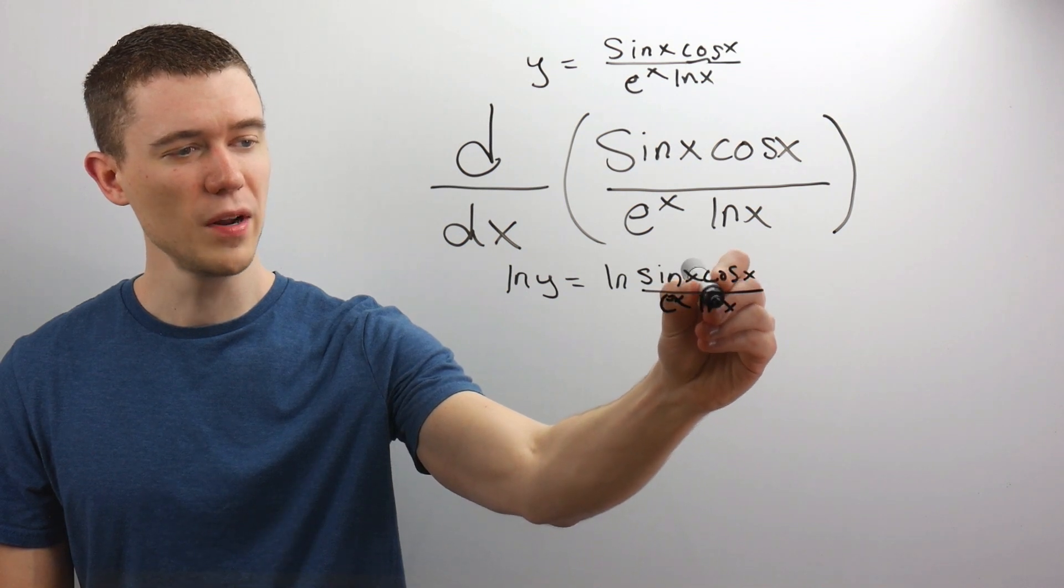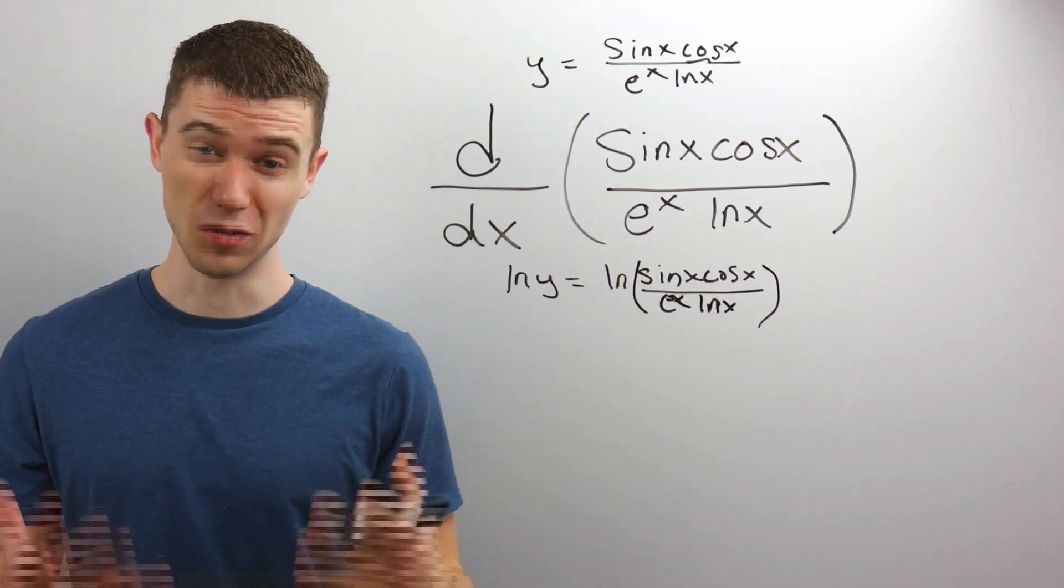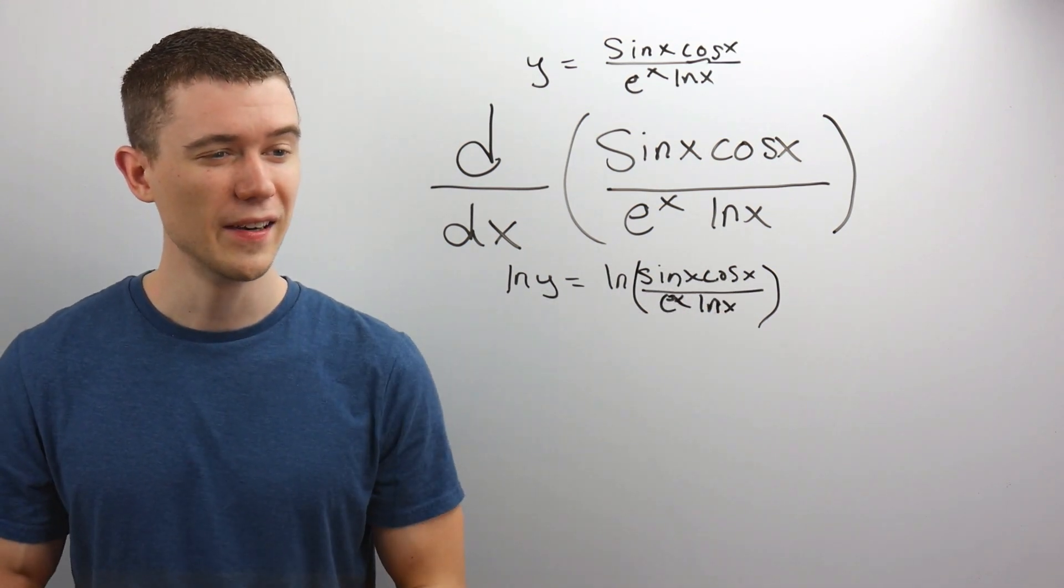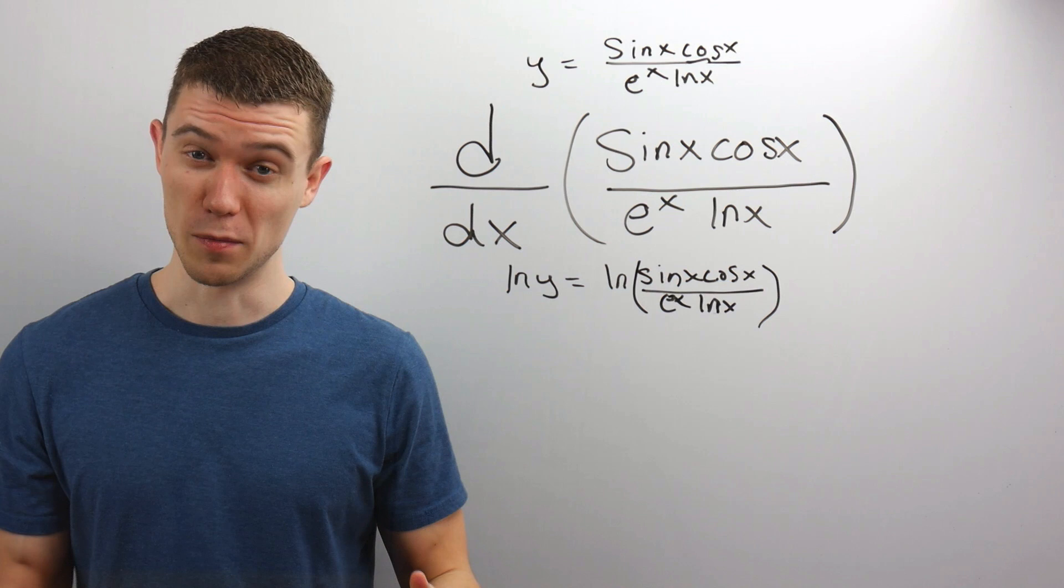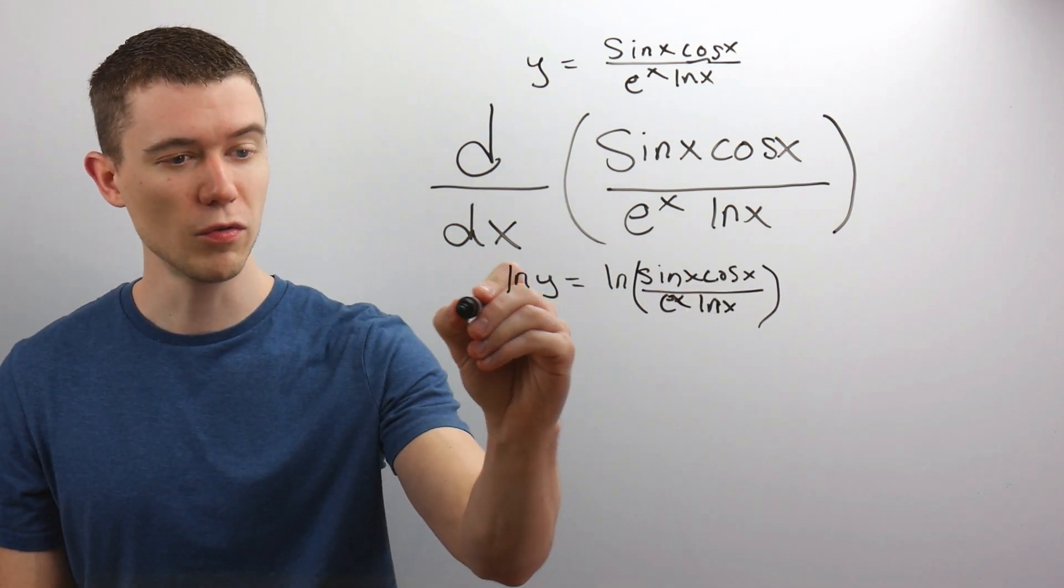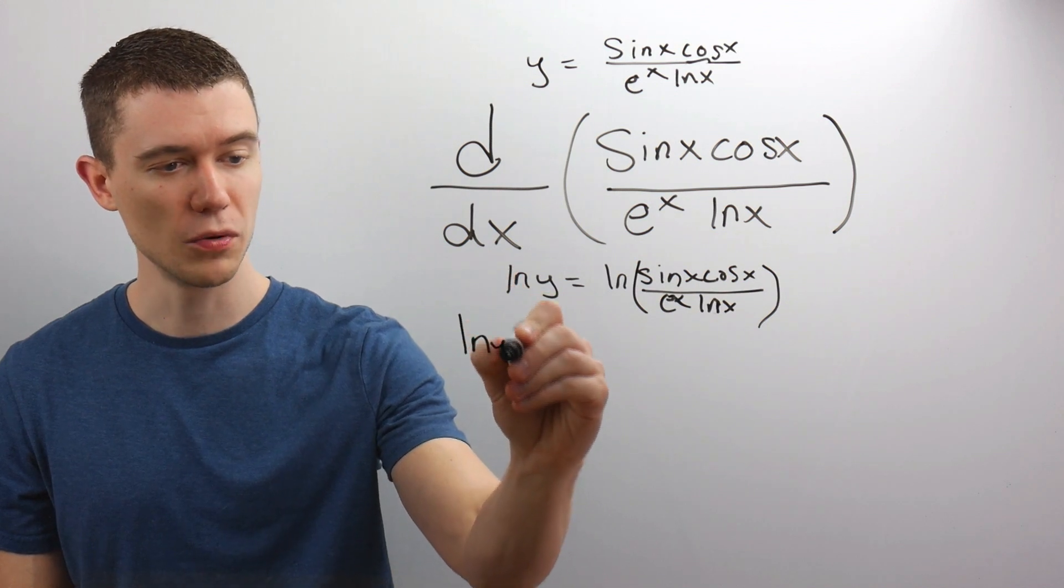Well, I'm pretty much just taking advantage of properties of logarithms. Namely that if I have the log of a product, well I can write that as the sum of logs. If I have the log of a quotient, I can write that as a difference of logs. So I'll just rewrite this. Think back to your pre-calc.